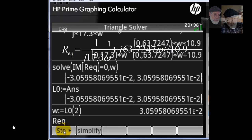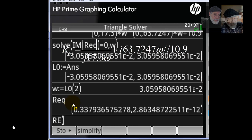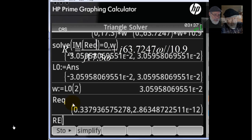If I type Req, it evaluates. The calculator evaluates Req and gives me the value. The real part is 0.337937, and the imaginary part is 2.86 times 10 to the negative 12, which is 0 for all practical purposes.